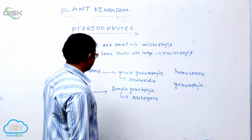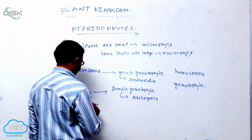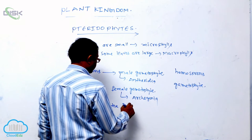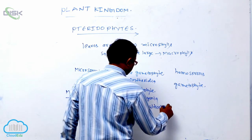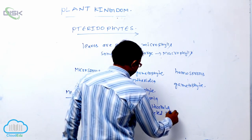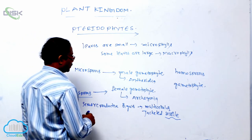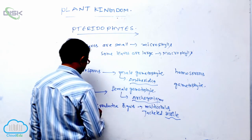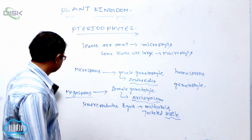In the gametophyte, antheridia and archegonia are the sexual reproductive organs. These sexual reproductive organs are multicellular, jacketed, and sessile structures. The male reproductive organ is known as the antheridia and the female reproductive organ is known as the archegonia. Stalks are absent.